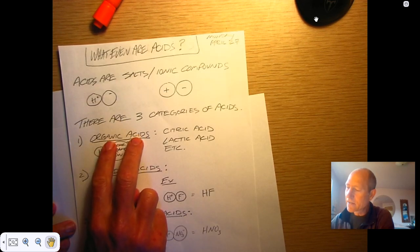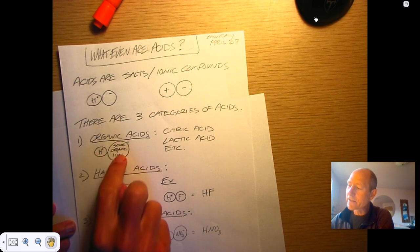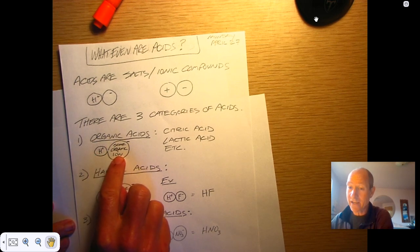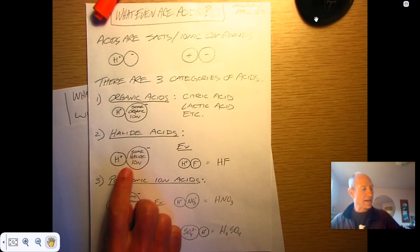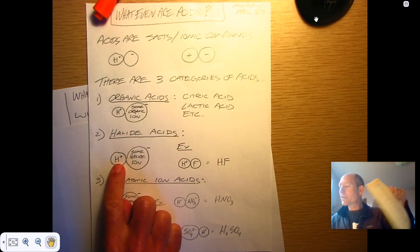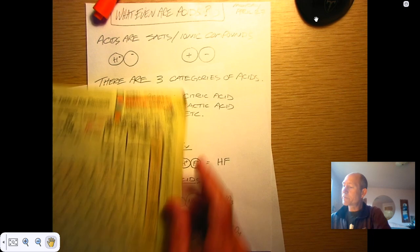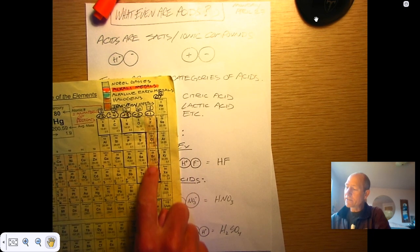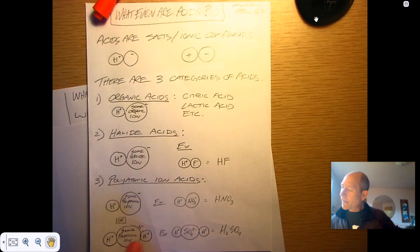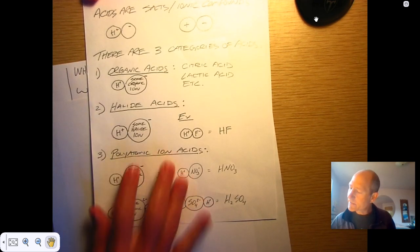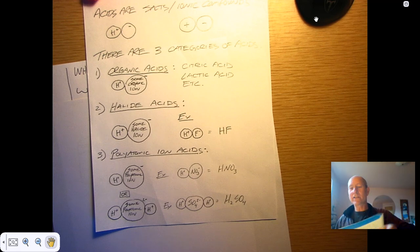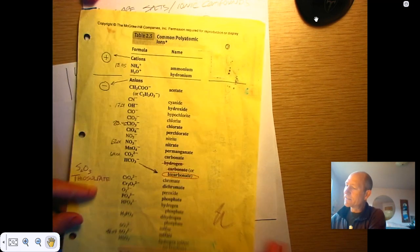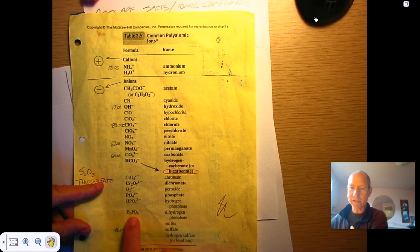There's organic acids, where that hydrogen ion is hooked up to some organic molecule, carbon-based molecule. There's halide acids, where the hydrogen ion is hooked up to one of these halogens. And then there's polyatomic ion acids, where the proton is hooked up to some polyatomic anion.